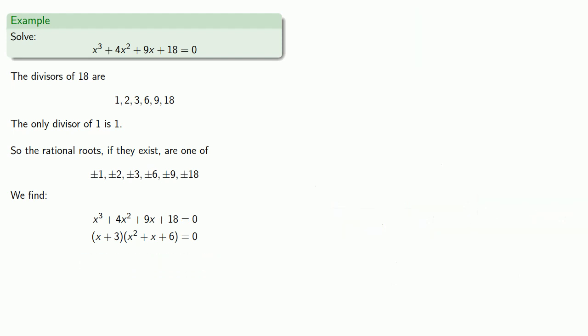So now our equation is written in the form product equals 0. So by the zero product property, we know that one of the factors has to be 0. So either x plus 3 is equal to 0, which we solve.